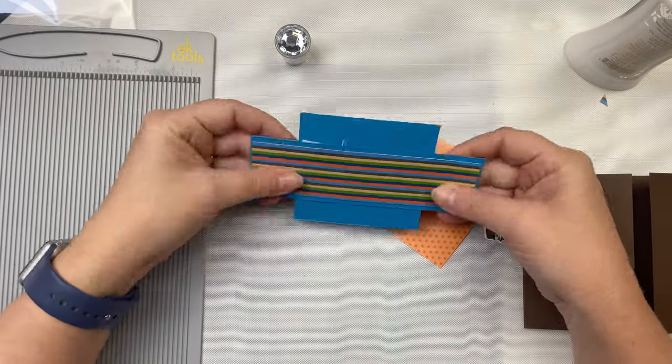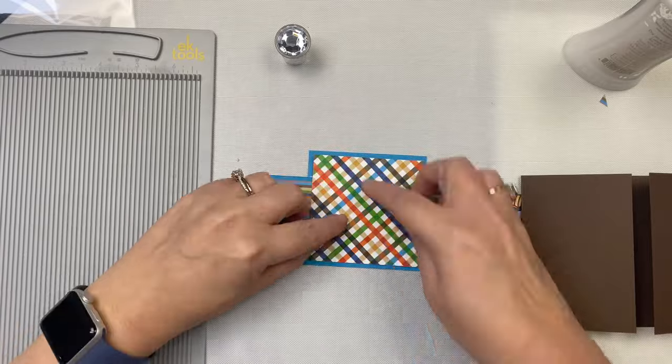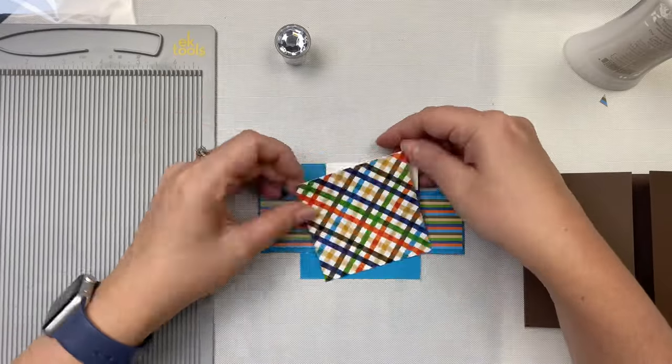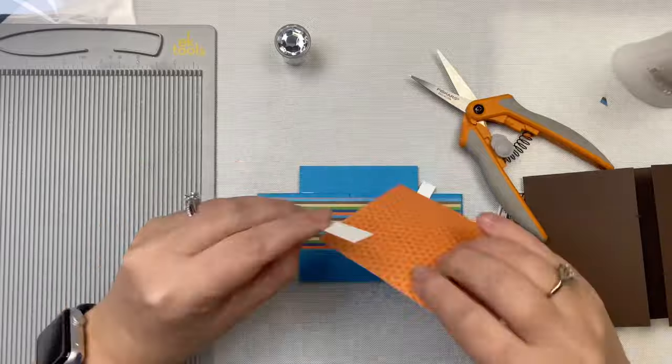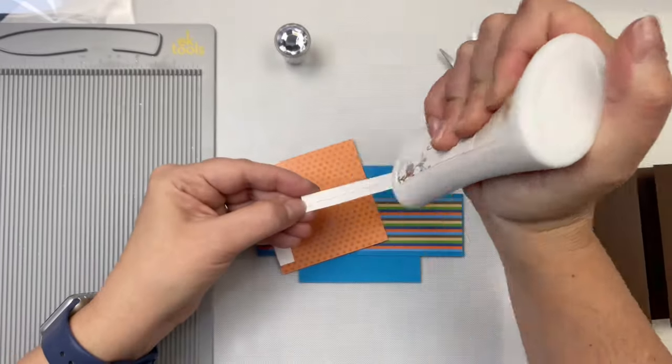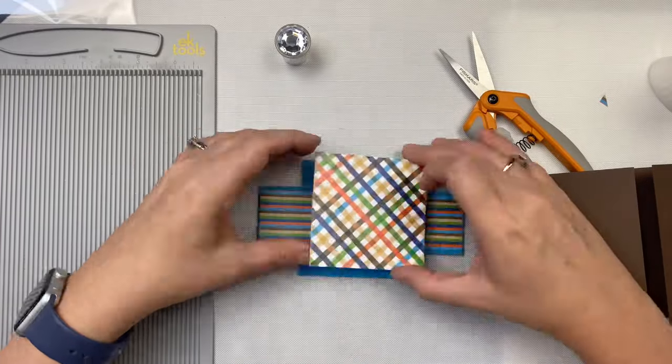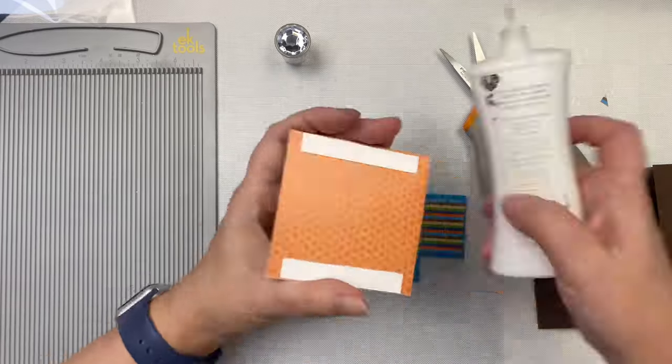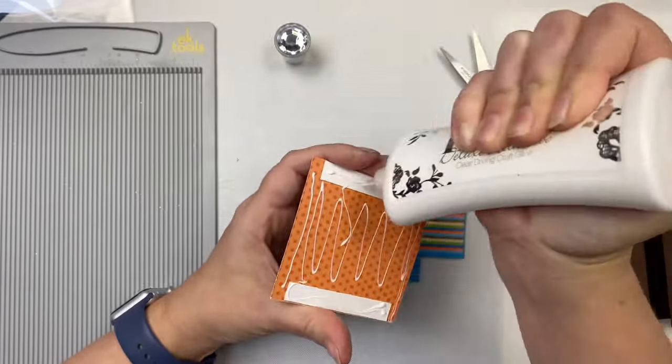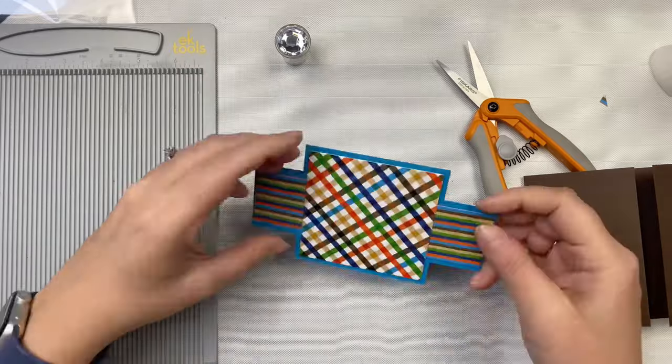I glued the striped pattern across the front, then I'm going to glue the 3 and a quarter inch square layer to the back side of this strip. I'm placing the 3 inch square pattern piece on top, and to keep it level, I added a couple of scrap pieces to the back of that pattern paper piece.